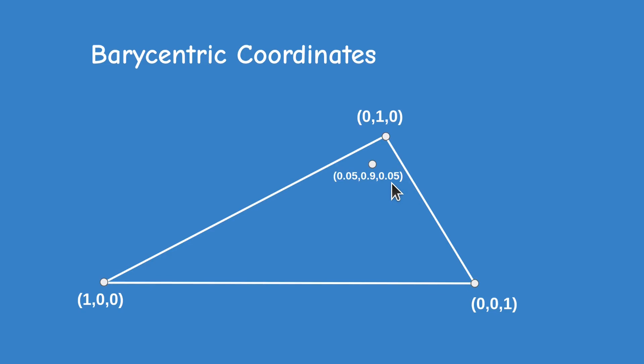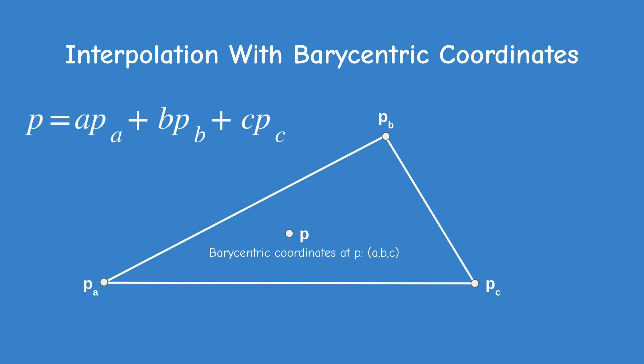If we know the barycentric coordinates at an arbitrary point, we can use them to interpolate the value of any attribute. In this diagram the values of the attributes at the vertices are pA, pB and pC. We want to interpolate the value at point P. If we find the barycentric coordinates a, b and c at point P, we can interpolate the attributes by multiplying each barycentric coordinate with its corresponding attribute and summing up the results.